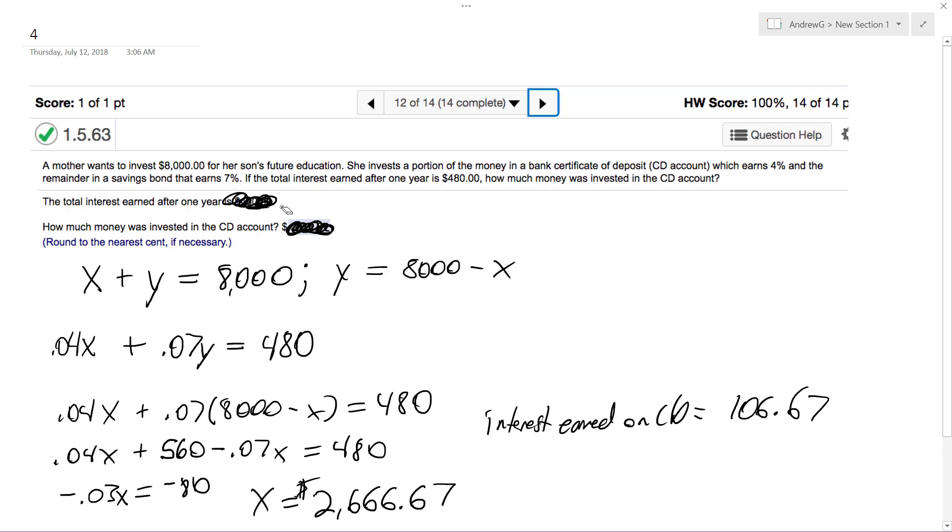I think that's right. I don't know why they tell you this. So total interest earned after one year is $480. That makes sense. And then the CD is $2,666.67.